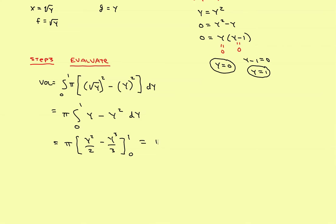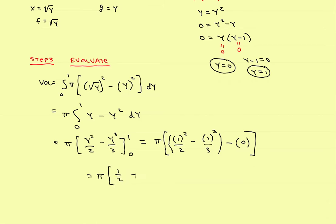Finding the anti-derivative gives y squared over two minus y cubed over three, evaluated between one and zero. Plugging in one: one squared over two minus one cubed over three. Plugging in zero gives zero. So the result is pi times one-half minus one-third. Putting both over the common denominator of six: three-sixths minus two-sixths equals one-sixth, giving a final answer of pi over six.